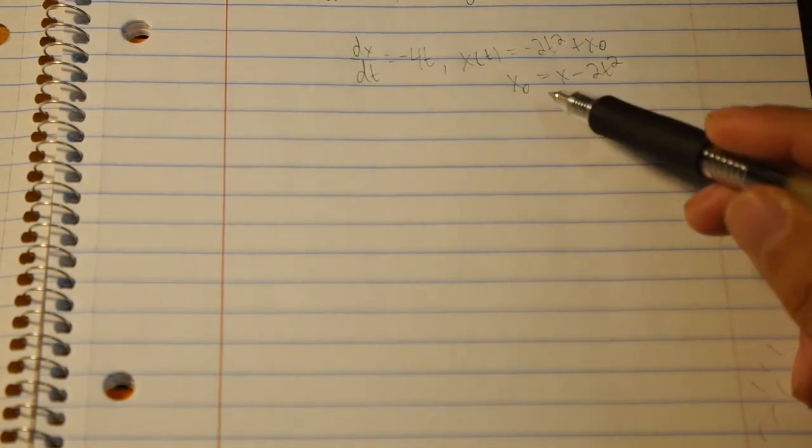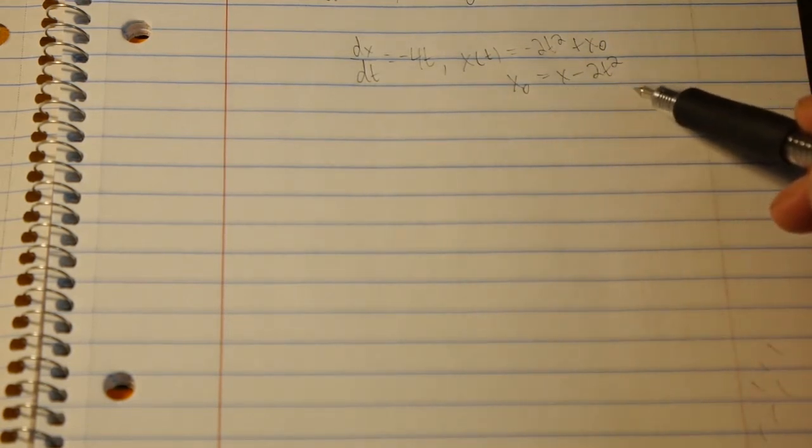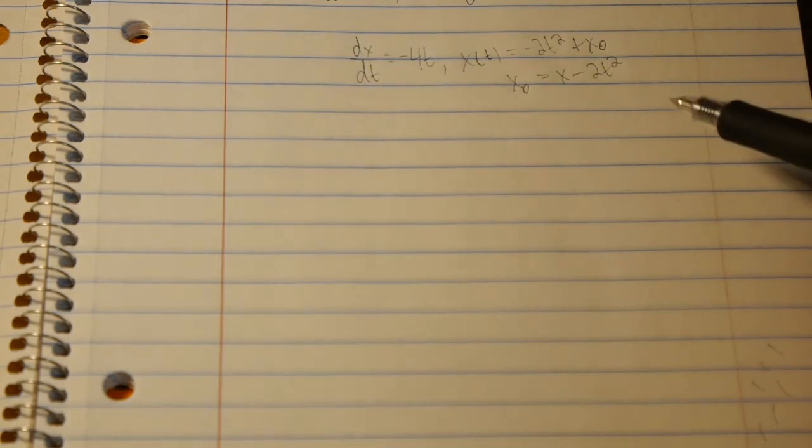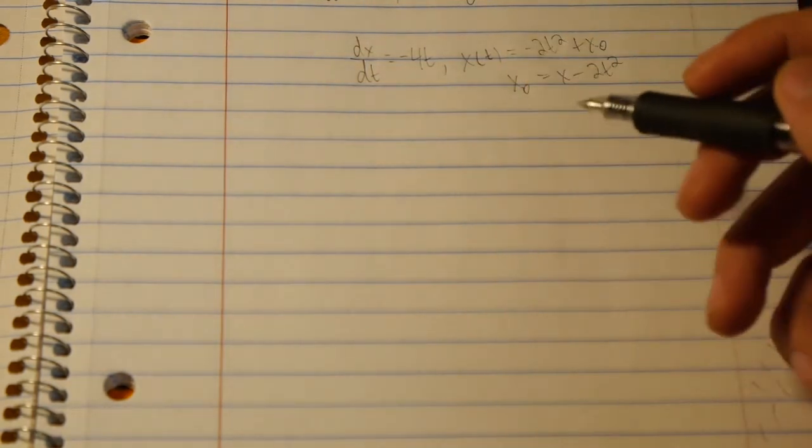Okay we're back. I just shifted the page down so we could have a little more room to write. So here we have x naught is equal to x minus 2t squared. And we'll remember that for later.